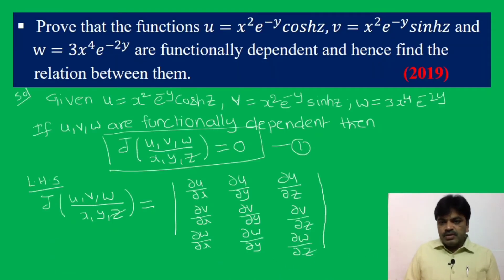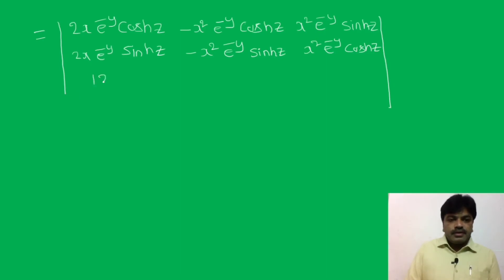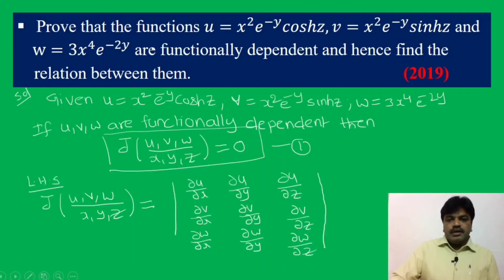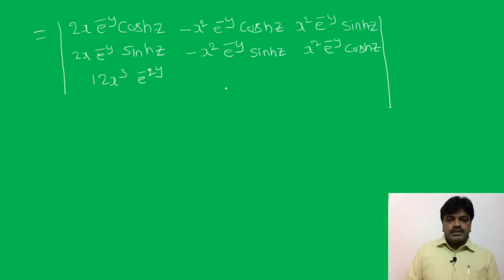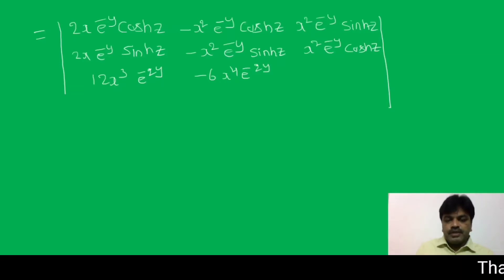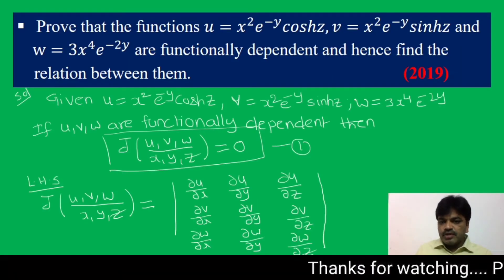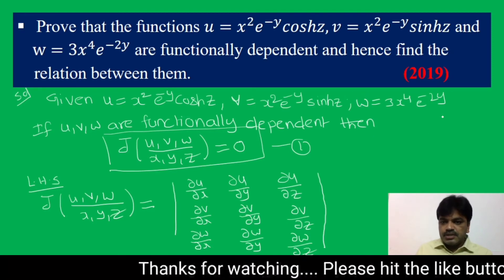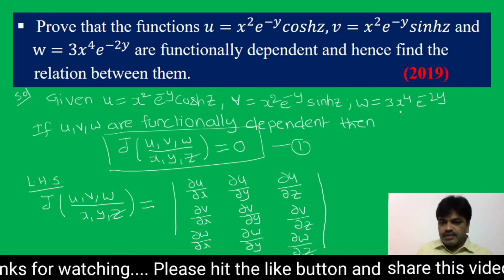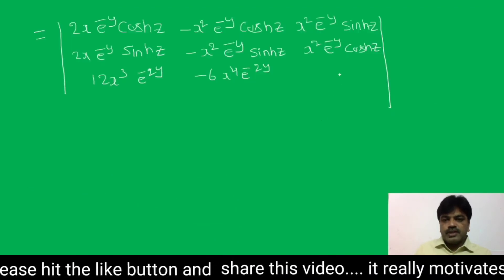For the third row, ∂w/∂x: derivative of x⁴ is 4x³, so 4 × 3 = 12x³ e^(−2y). With respect to y: e^(−2y) derivative gives −2, so −2 × 3 = −6x⁴ e^(−2y). There is no z term in w, so ∂w/∂z = 0.